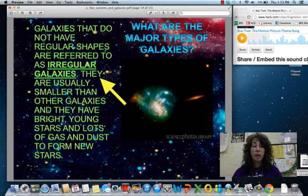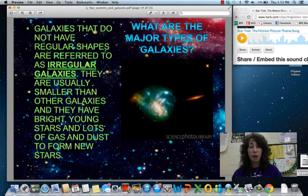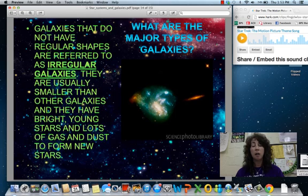Galaxies that don't have a regular shape, like the elliptical or like the spiral, are called irregular galaxies because they have irregular shapes. They are typically smaller than the other types of galaxies and they are full of very bright and young stars, lots of dust, lots of gas, and lots of new formations going on.